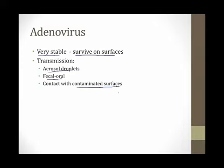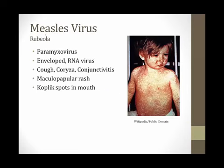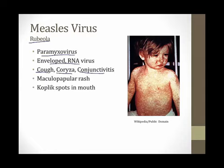The measles virus, also known as rubeola, is a paramyxovirus — an enveloped RNA virus. It's rare in the modern era, largely eradicated by vaccination. The classic triad of measles symptoms is cough, coryza, and conjunctivitis. Children who develop measles often have injection of their conjunctiva. They also develop a maculopapular rash and Koplik spots — characteristic spots visible in the mouth of children with measles.